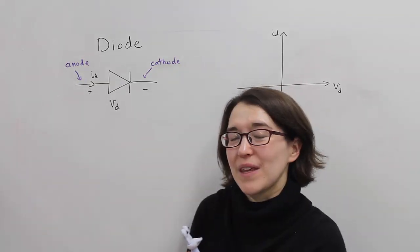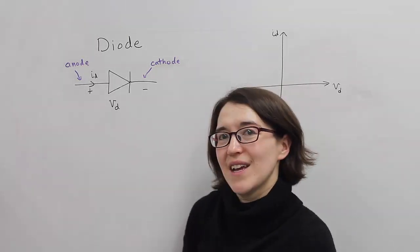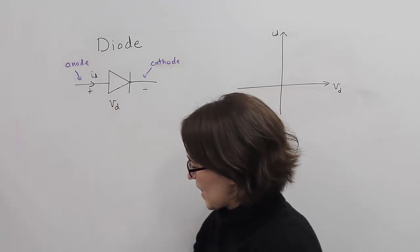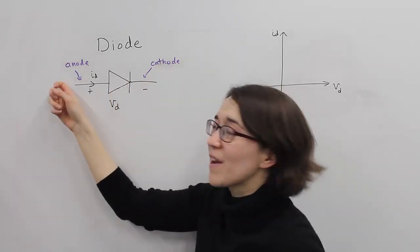Today we're talking about the ideal diode as a switch. And here's the symbol for the diode. And you can see that this is the cathode and this is the anode.